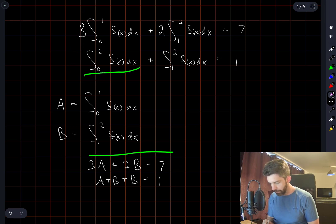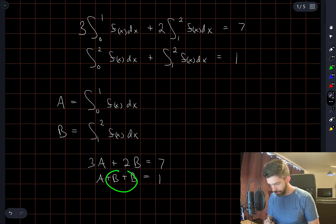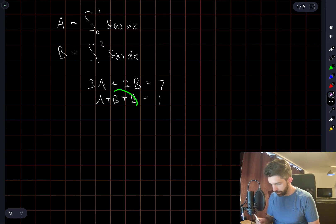So all I've done is this first integral, I've split up - this is equal to A plus B. And then, of course, down here I can combine these B's into 2B, like this.